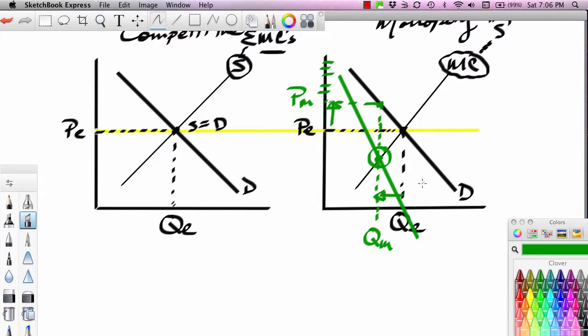And the argument against monopolization, the reason the government would step in to prevent monopolization is it's trying to keep prices from rising above a competitive level and it's trying to keep output from falling below a competitive level.